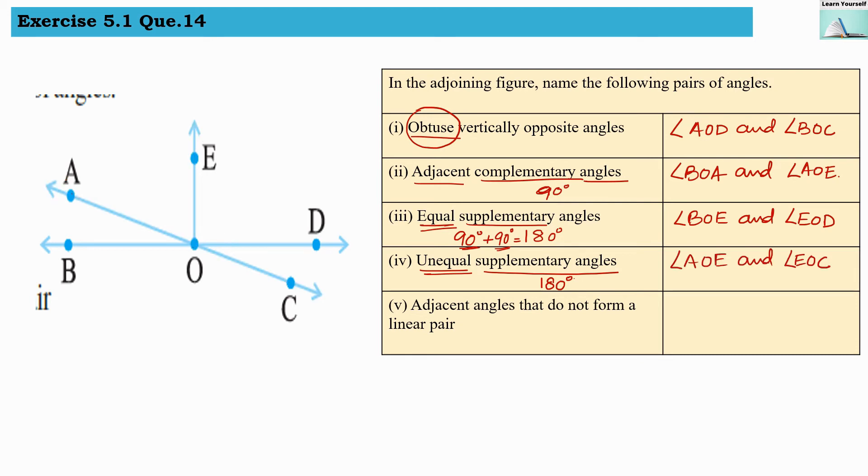Fifth question: adjacent angles that do not form a linear pair. We can find out many pairs. The first pair is angle AOE and another angle is angle EOD. So these two angles are adjacent as well as they are not forming linear pairs. So this is the first pair.